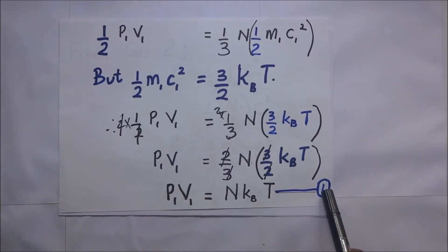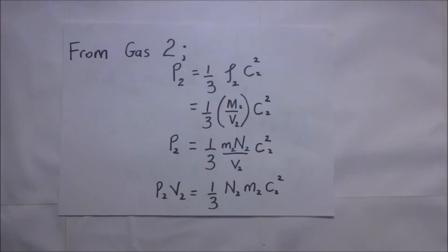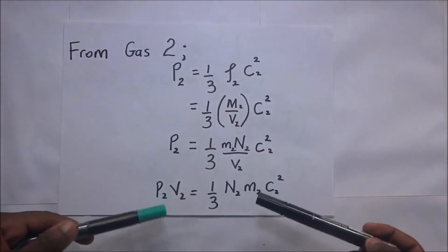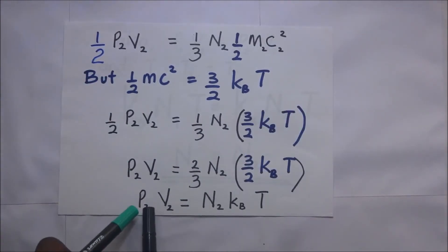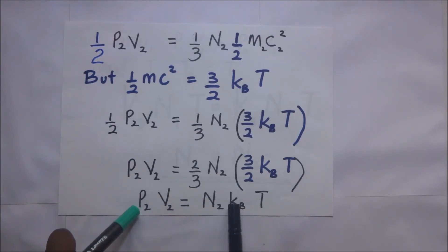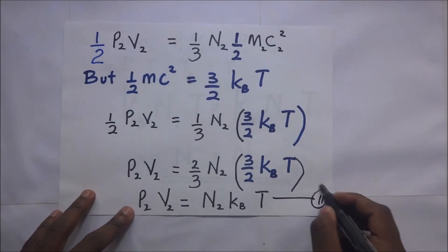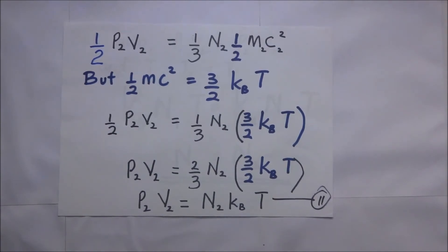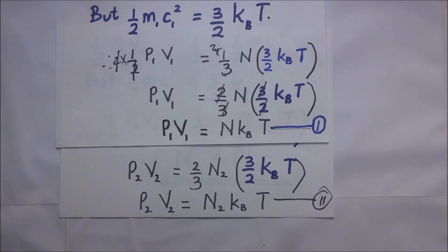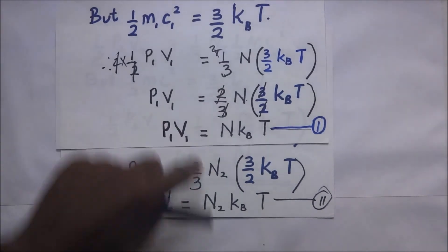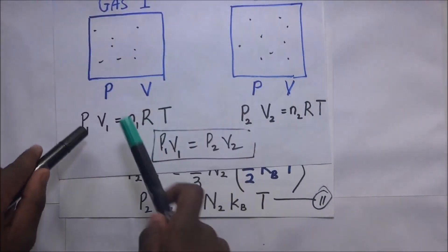We now apply the same treatment to gas two. Going through the same steps as before, we end up with the same form of expression: P2V2 equals N2 times kb times T. This is our second expression. So we now have two expressions: P1V1 equals N1kbT1 and P2V2 equals N2kbT2. Remember we said we are subjecting both gases to the same pressure and the same volume.